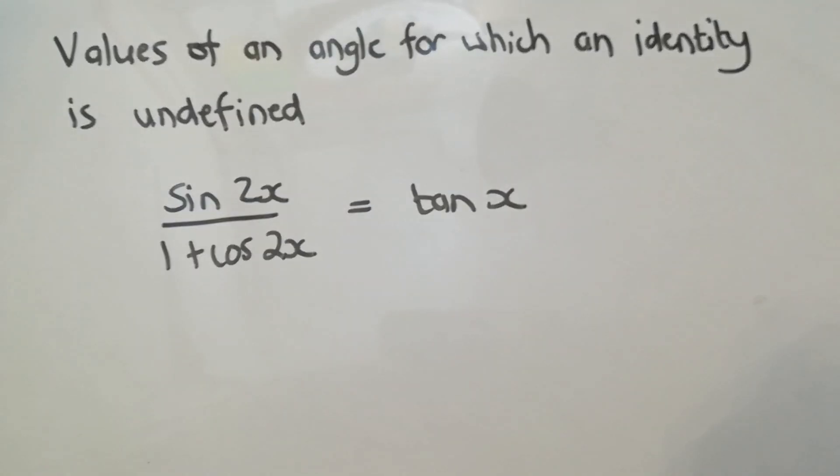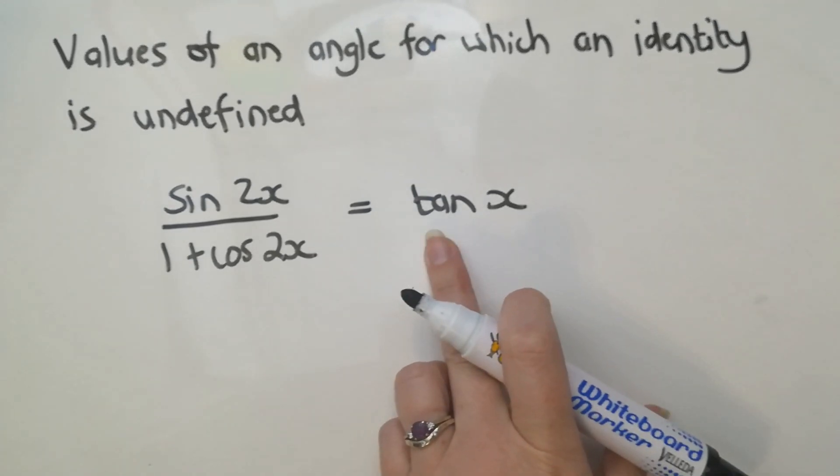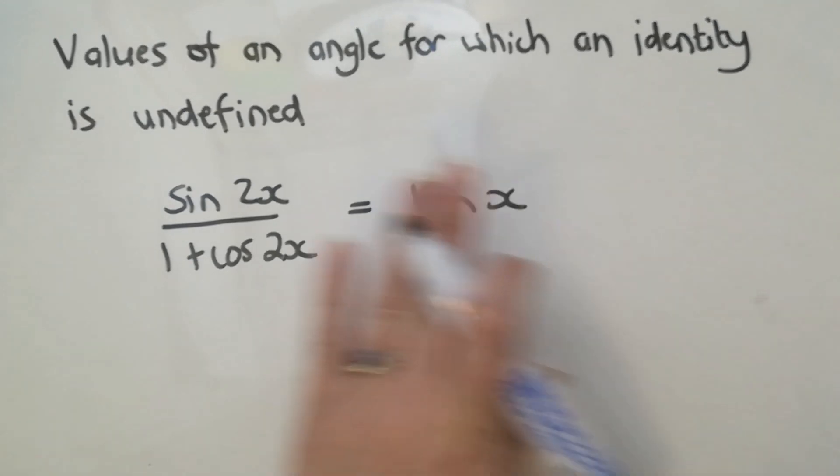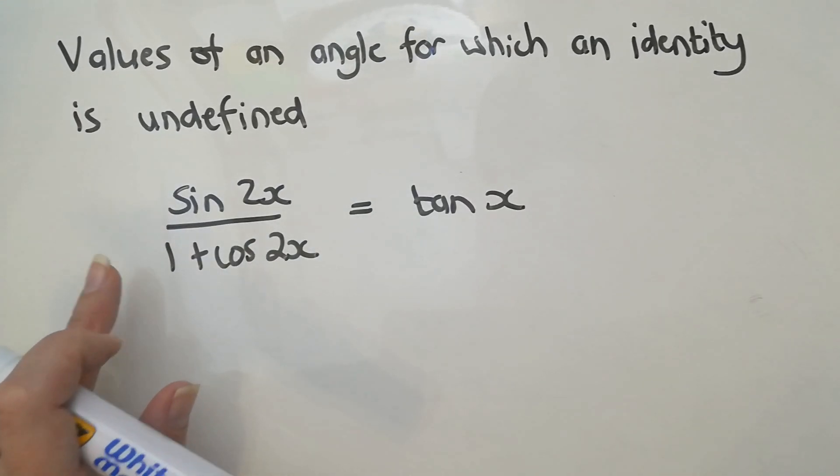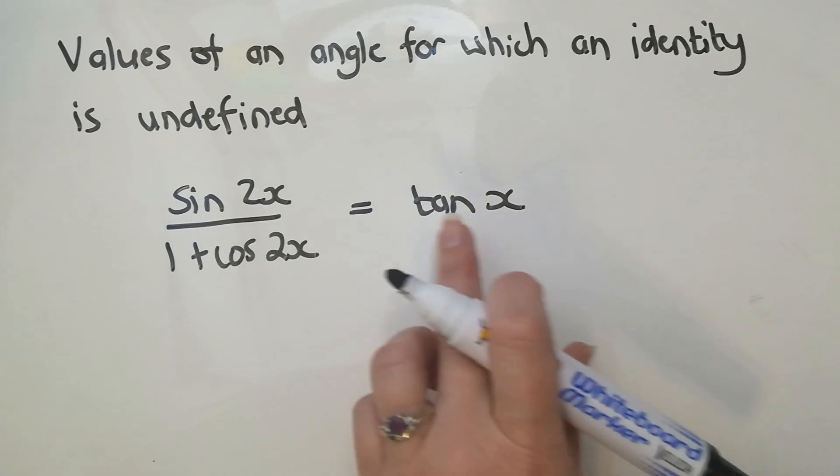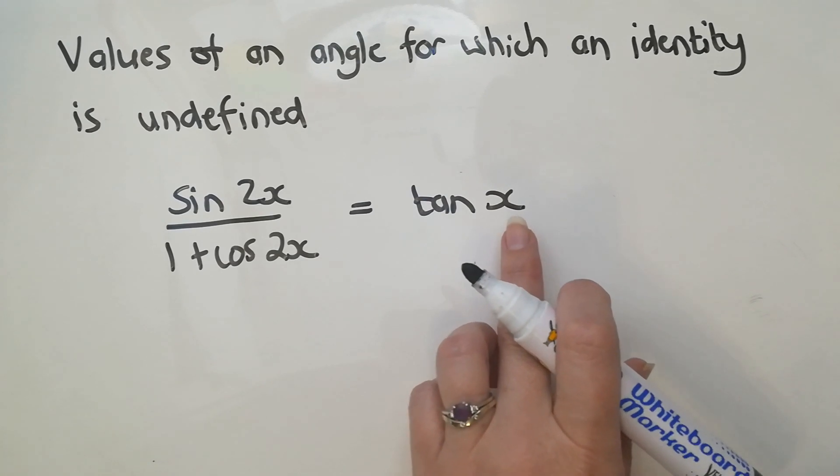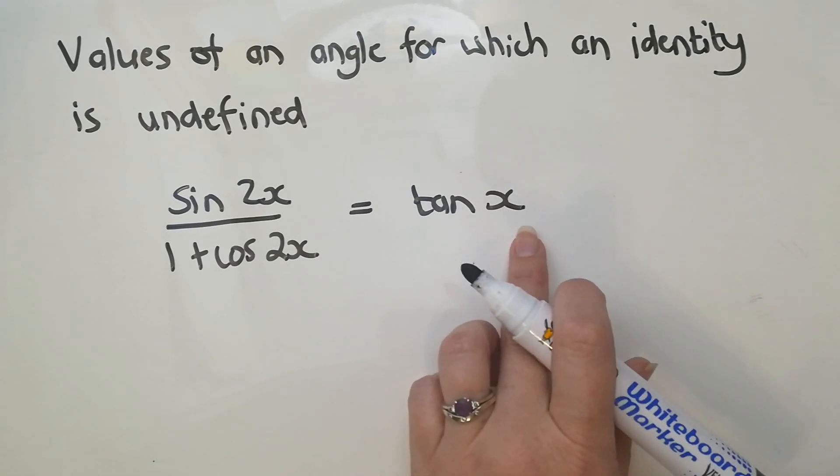So with these questions where you've got to find where they're undefined, you're looking at two things. You're looking at tans wherever they are, and then you're not looking at other numerators, you're just looking at denominators and you want to make sure they can't be 0. So I first want to check out that one and I know that x can't be 90 plus k180, so there's only the one solution there.